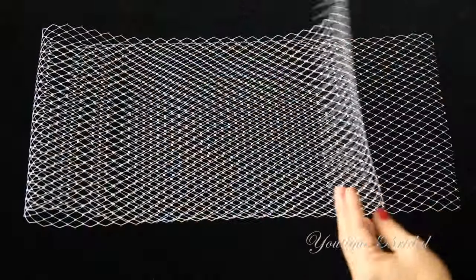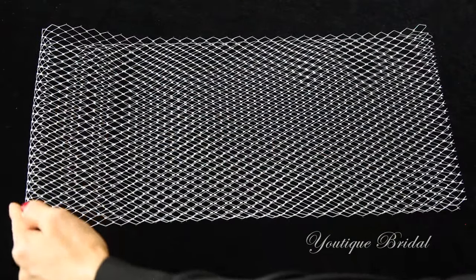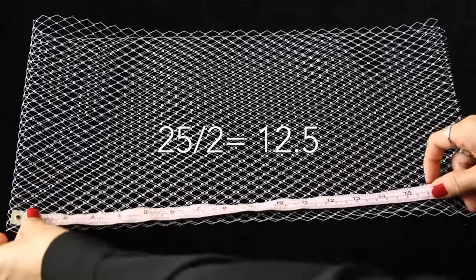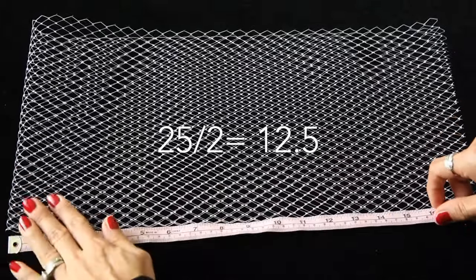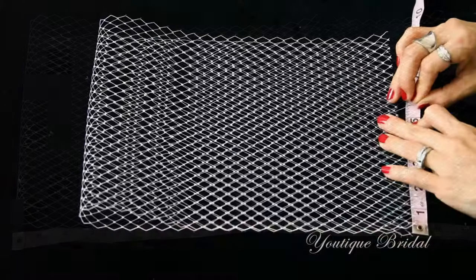Next lay out the Russian tulle and make note of the open ends and the folded ends. Now divide the total length you need by two. Mine will be 12 and a half inches and I'm going to cut it straight up from this point.